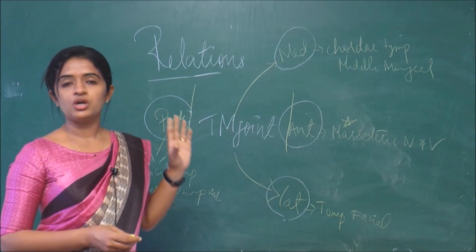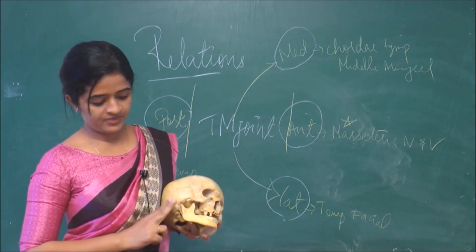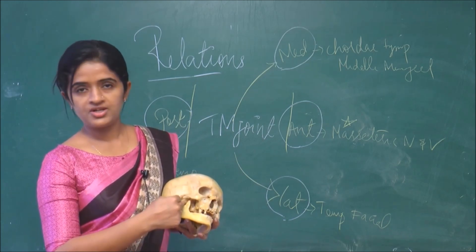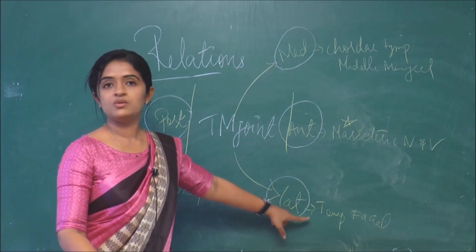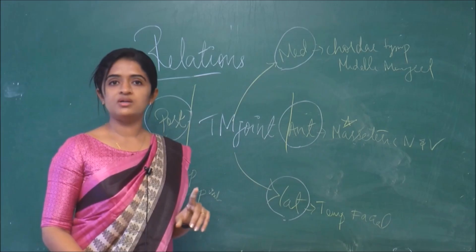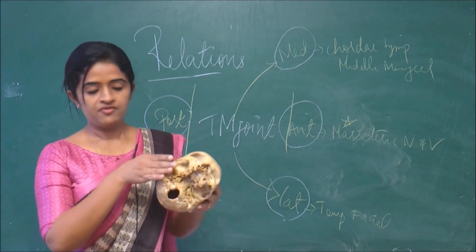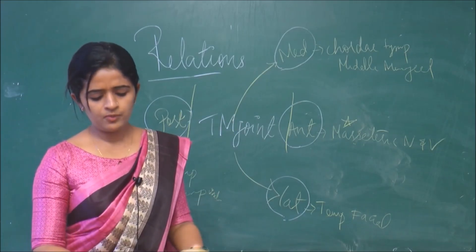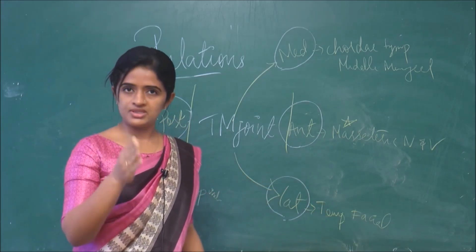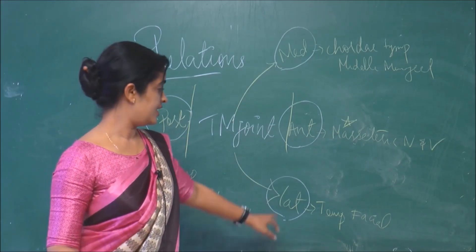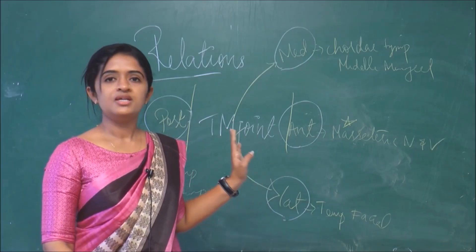Altogether, when we talk about the relations of the temporomandibular joint, we consider the lateral, medial, anterior, and posterior relations. Only the lateral relation has just one nerve, whereas all the other relations involve one nerve and a vessel. Additionally, for the lateral relation, apart from the temporal branch of the facial nerve, you can also include the skin, fascia, and parotid gland. For all remaining relations, just think about one nerve and a vessel in close contact with the temporomandibular joint.